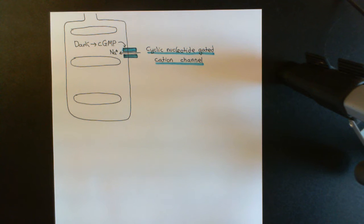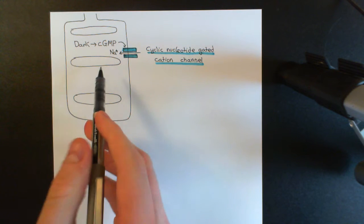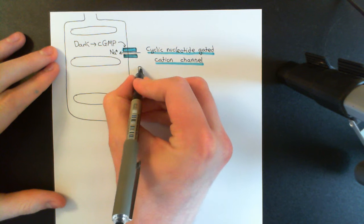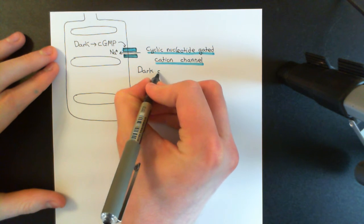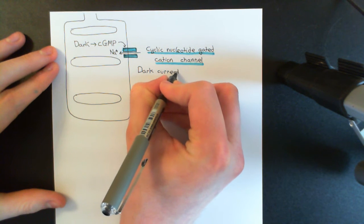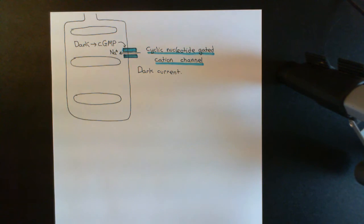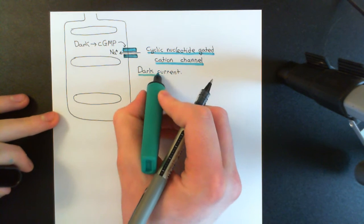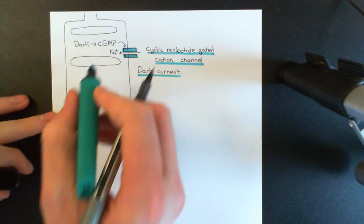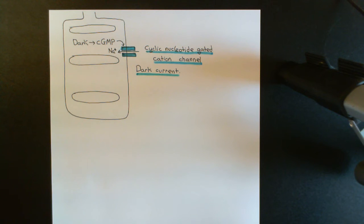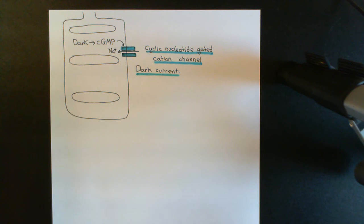This current of sodium ions coming from the outside of the cell into the cytoplasm of the cell in the dark state is known as the dark current. A current is just a movement of charged particles — we have a movement of positively charged sodium ions into the cell that is dependent upon the cell being in the dark state. This dark current will go as soon as we're exposed to light, because the cyclic GMP will go down, the cyclic nucleotide gated ion channels will close, and therefore the sodium ions that are usually coming in from the extracellular fluid into the cytoplasm will stop.